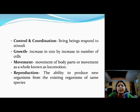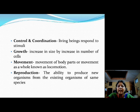Then comes the last physiological process, that is reproduction — the ability to produce new organisms from existing organisms of the same species. All organisms, whether microorganisms, plants, or animals, they all reproduce but have different reproductive methods. In the case of microorganisms it can be through binary fission, budding, fragmentation, or spore formation. In the case of plants it can be through sexual as well as asexual reproduction. In the case of animals it is mostly through sexual reproduction, with few exceptions.